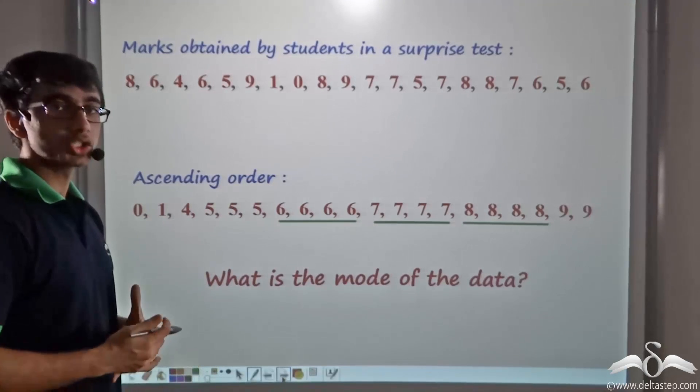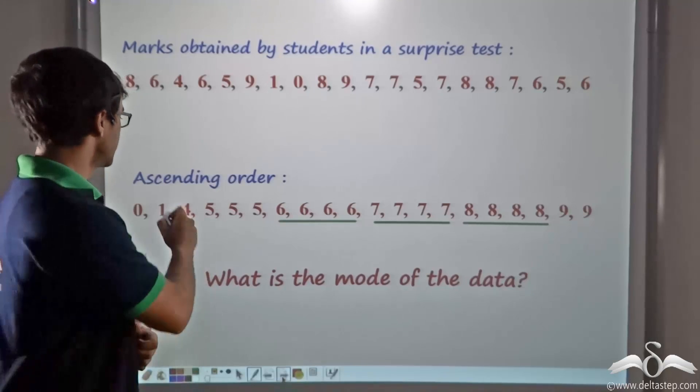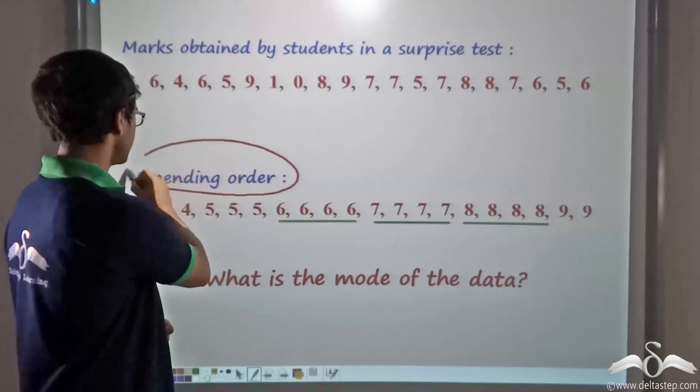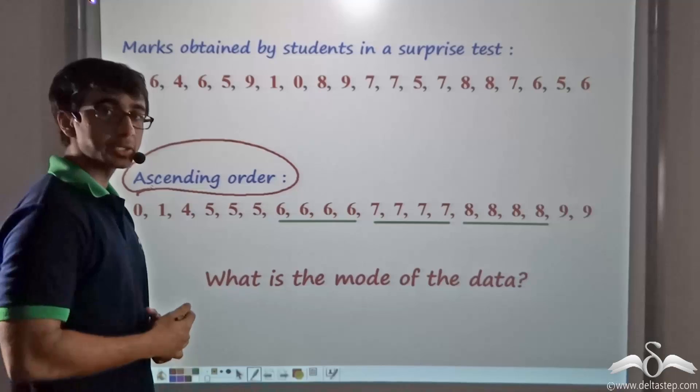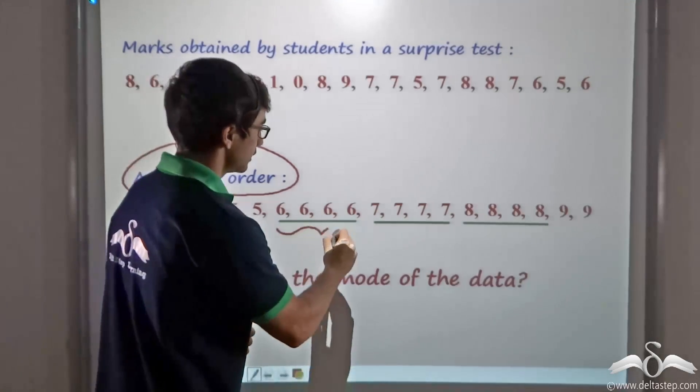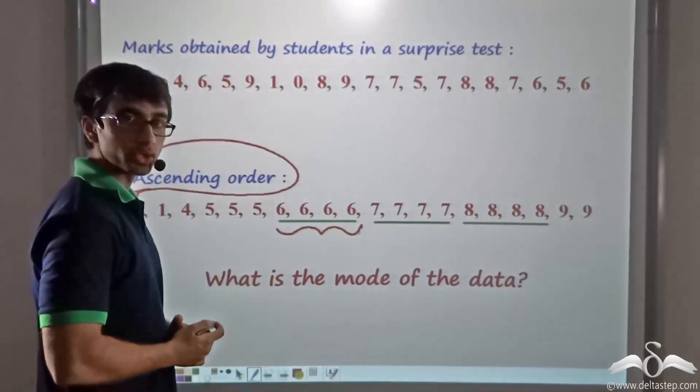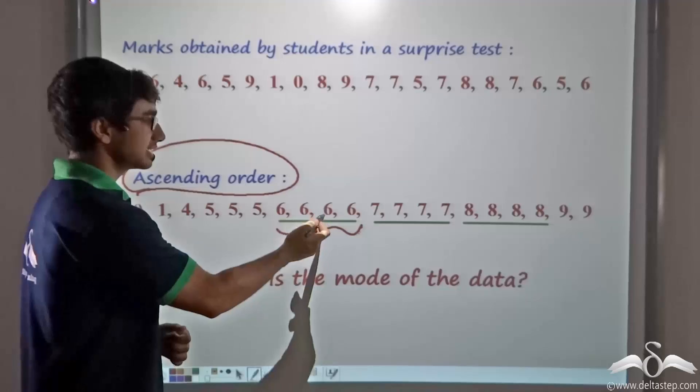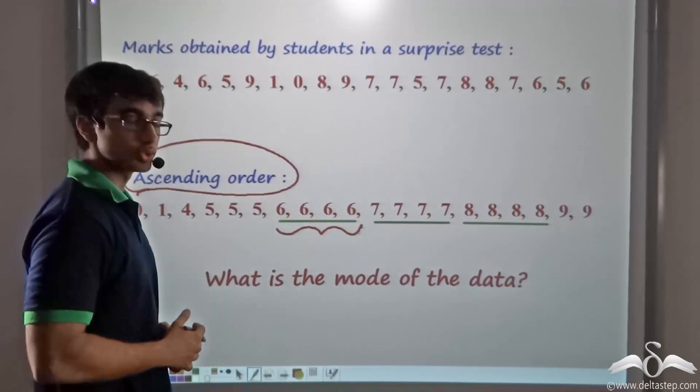Firstly, in order to make things easier for us, we arrange the data in ascending order. Now after arranging it, we find that 6 is occurring four times. That is, the number 6 has been obtained by four students.